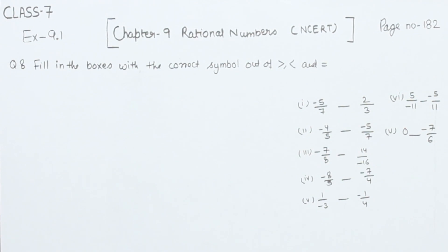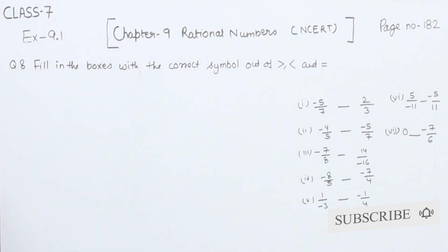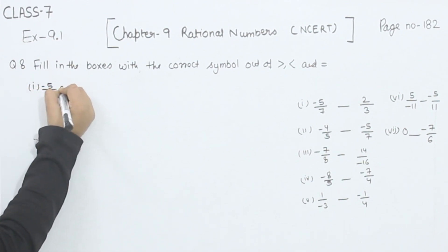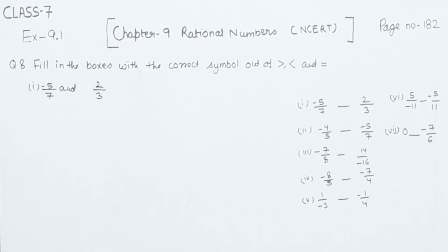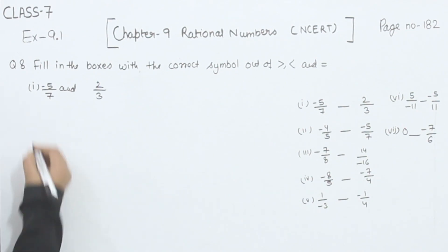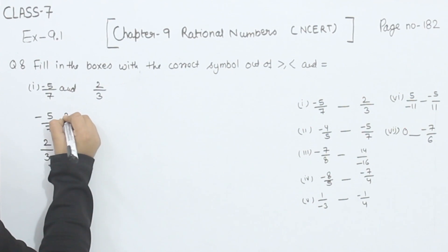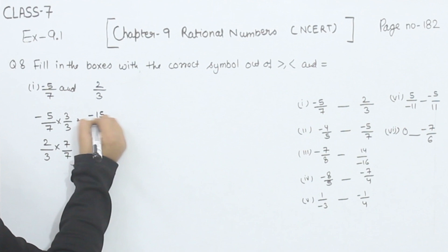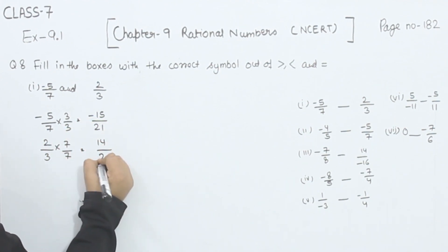We are going to start with the first one. We are having 7 parts in the question. In the first one, we have minus 5 by 7 and 2 by 3. For the comparison, the denominator should be same for both of them, so I am going to multiply each part with the other's denominator. This gives us 5 × 3 = 15 and 7 × 3 = 21, and 7 × 2 = 14 and 7 × 3 = 21.